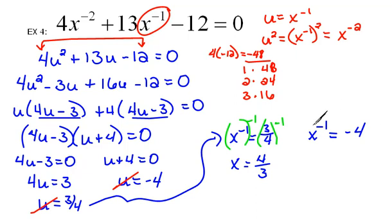We would do the same thing over here. If I raise both sides to the negative 1 power to get x to the first, then negative 4 flipped over would be negative 1 fourth.